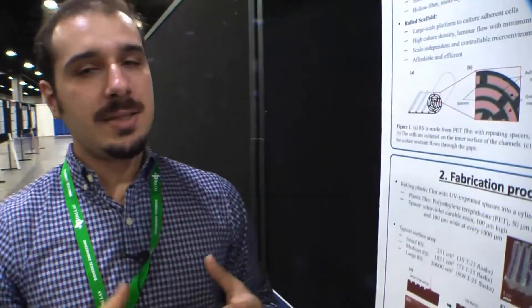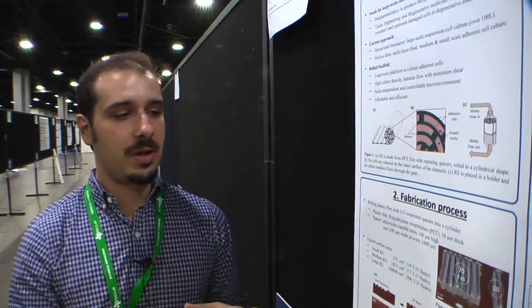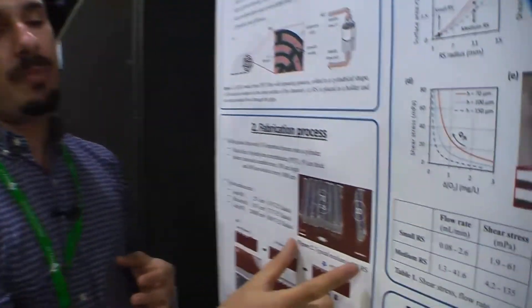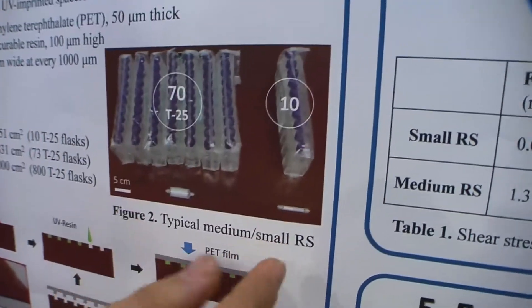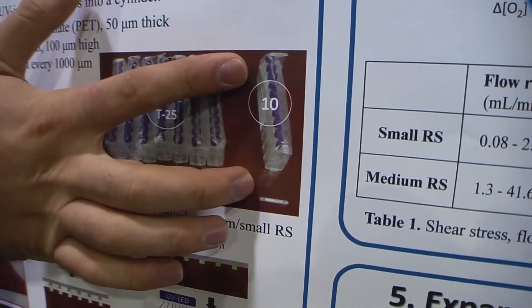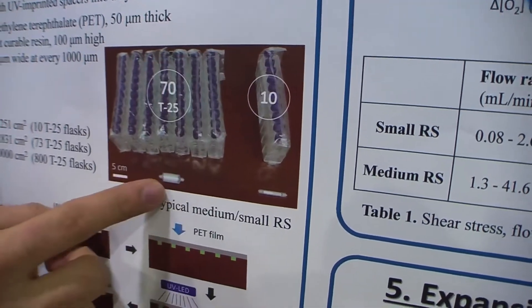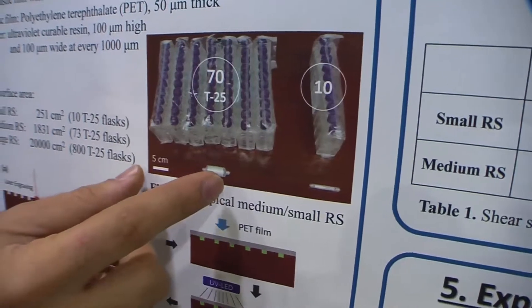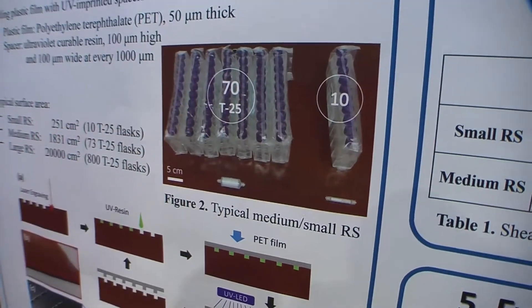Basically, it is a very compact bioreactor with lots of surface area in a small volume. For example, when you compare it to conventional 2D culture, the small Roll the Scaffold has the equivalent surface area of 10 T25 flasks, and the medium size has the equivalent surface area of more than 70 T25 flasks.